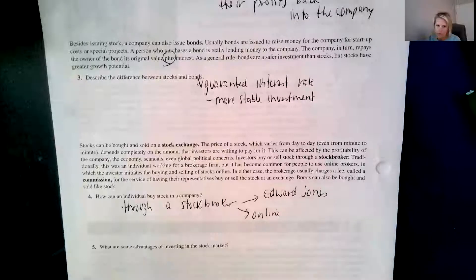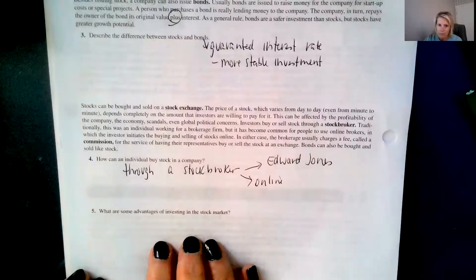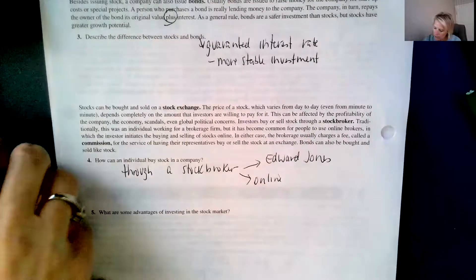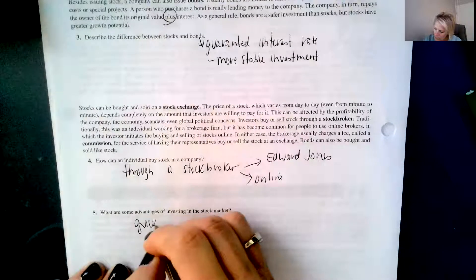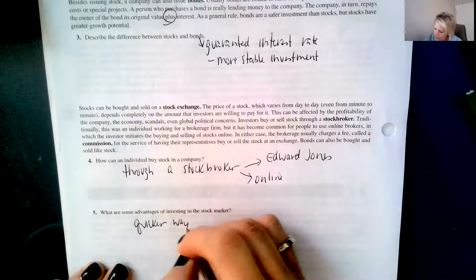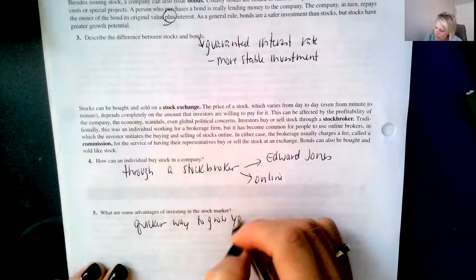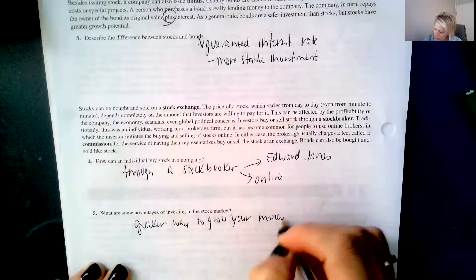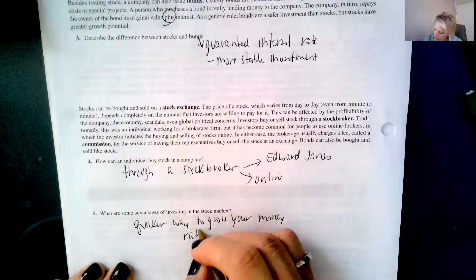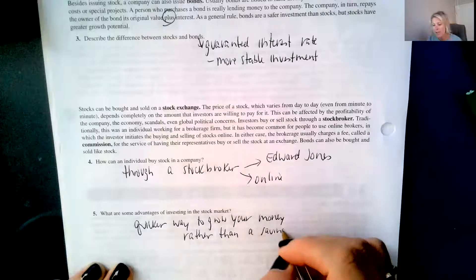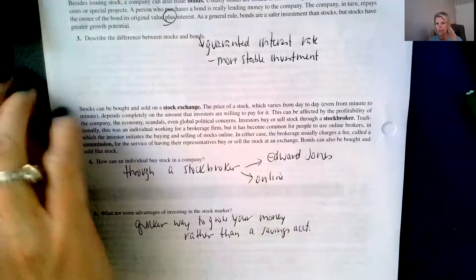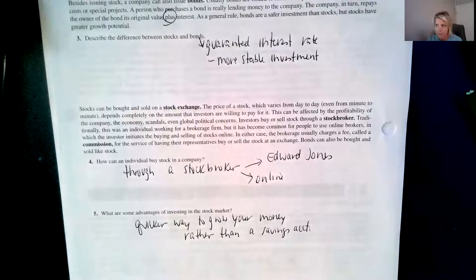It says, what are some advantages of investing in the stock market? So it's a quicker way to grow your money rather than a savings account. Now, but the stock market, depending on what company you invest in, can be volatile. Volatile means it could be risky, whereas putting your money in a savings account is very safe. So something to think about.